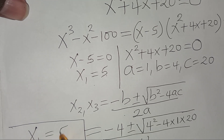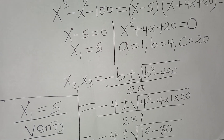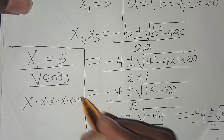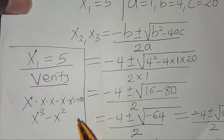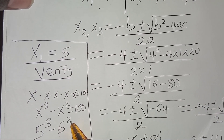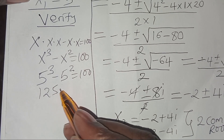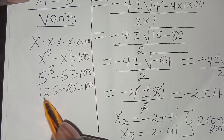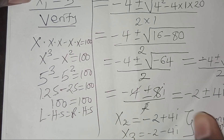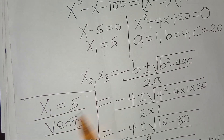Given that x1 equals 5, let's verify that this root satisfies the original equation: x times x times x, subtract x times x, equals 100, which is x cubed minus x squared equals 100. With x equal to 5, we get 5 cubed minus 5 squared, which is 125 minus 25, equals 100. The left hand side equals the right hand side, confirming we have three solutions: two complex roots and one real root, x equals 5.